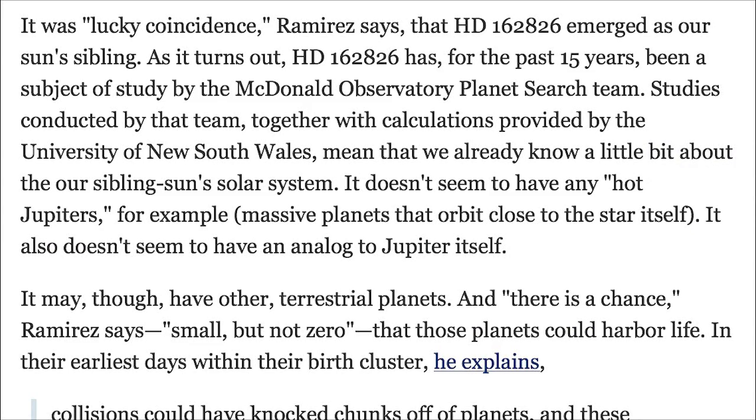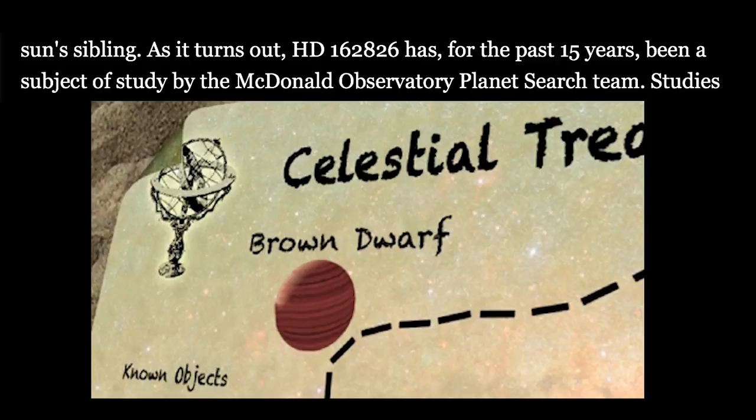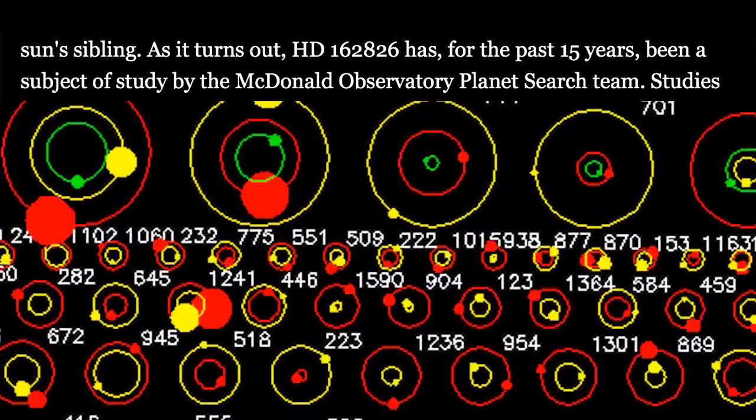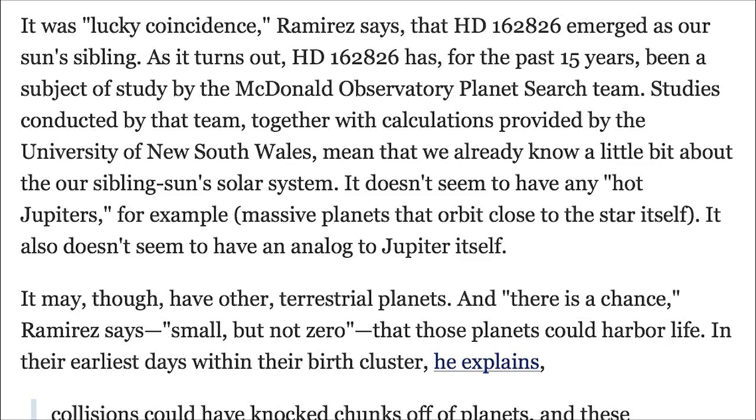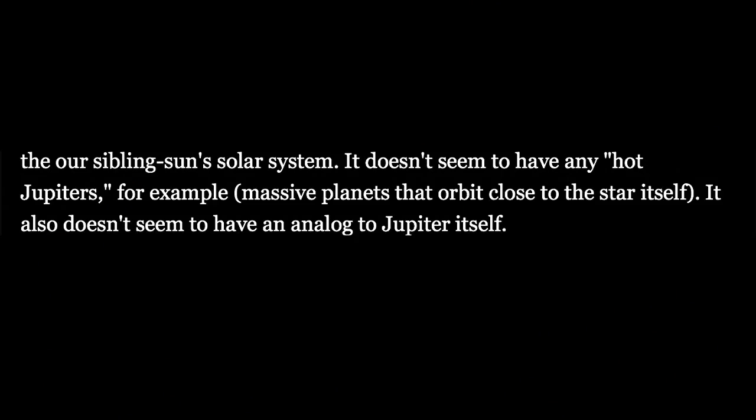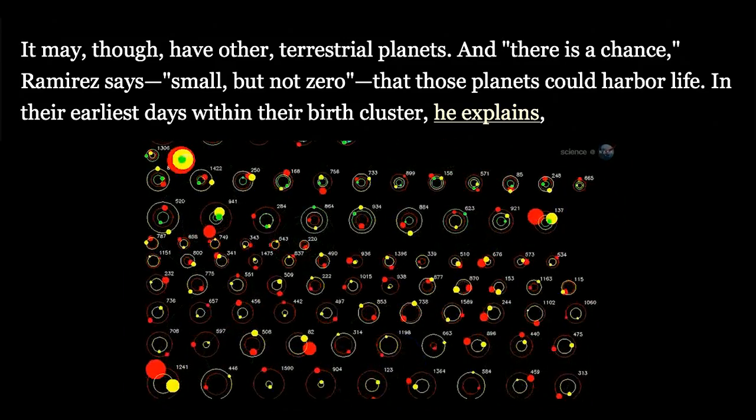Ramirez says that HD 162826 emerged as our sun's sibling. As it turns out, sister sun has, for the past 15 years, been a subject of study by the McDonald Observatory Planet Search team. Studies conducted by that team, together with the calculations provided by the University of New South Wales, mean that we already know a little bit about our sibling sun's solar system. It doesn't seem to have any hot Jupiters, for example—massive planets that orbit close to the star itself. It also doesn't seem to have an analog to Jupiter itself.